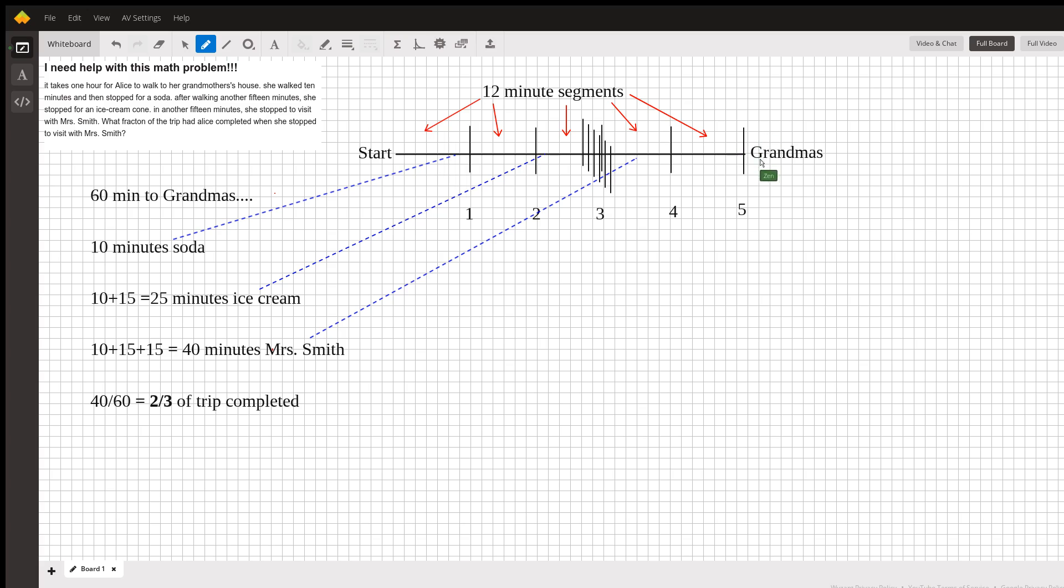Now, whole journey, 60 minutes. Here at Mrs. Smith is 40 minutes. So they want to know the fractional representation that she's already completed. So that's simply a fraction. 40 minutes over 60 minutes is really 2 over 3, or two-thirds of the trip completed.